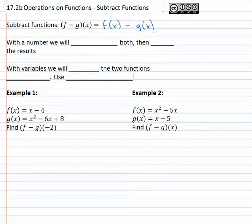With a number this is quite simple because all we have to do is evaluate both. Maybe find out what f(2) is and what g(2) is, and then we will subtract the results.